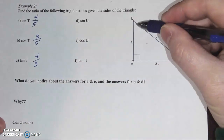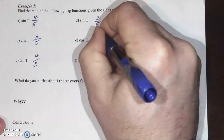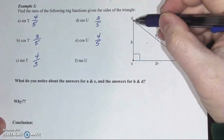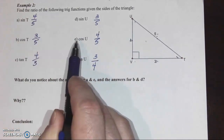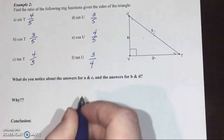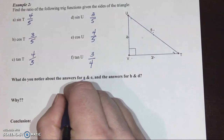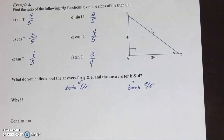Sine of angle U: opposite is 3, hypotenuse 5, so 3 over 5. Cosine of angle U: adjacent is 4, hypotenuse 5, so 4 over 5. Tangent from angle U: opposite over adjacent gives 3 over 4. The interesting thing is that the answers for A and E — sine of angle T and cosine of the other angle — and B and D — cosine of angle T and sine of the other angle — are the same. A and E are both 4 over 5; B and D are both 3 over 5.